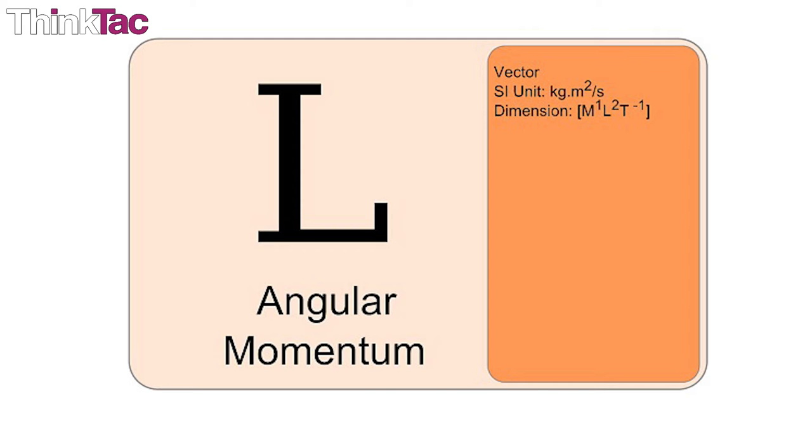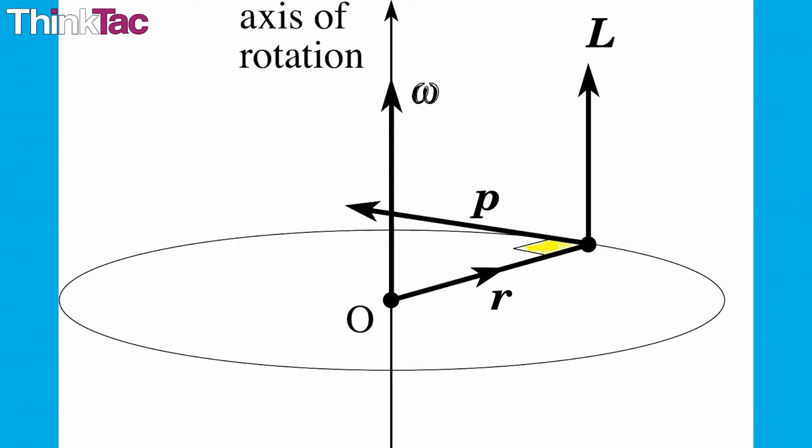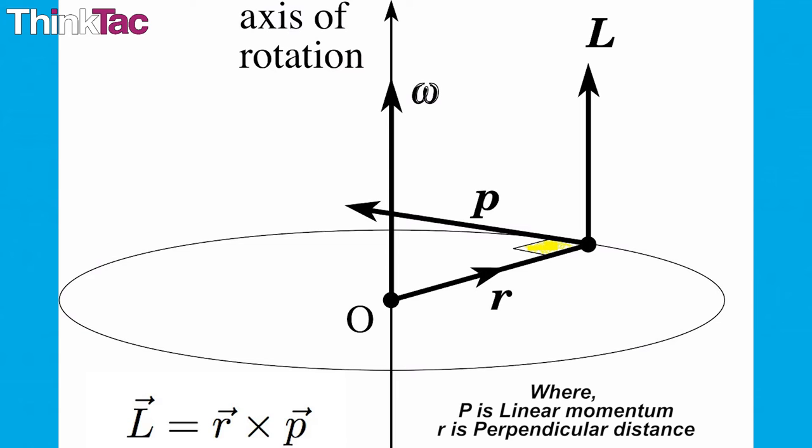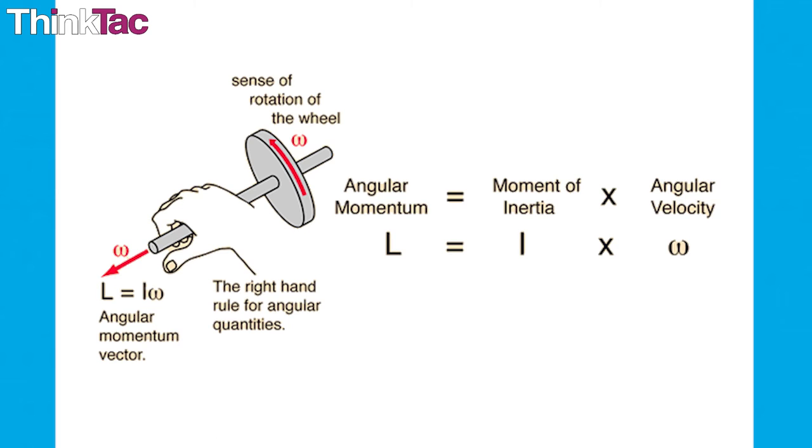Angular momentum is a rotational corollary to linear momentum. It is a product of the linear momentum and the perpendicular distance from the axis of rotation. It is also the product of the moment of inertia and the angular velocity.